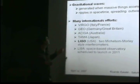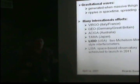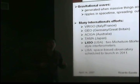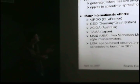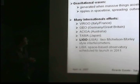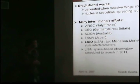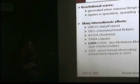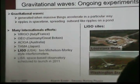So far, we have not directly detected gravitational waves. There are many international efforts trying to detect them. We have Virgo in Italy and France, GEO600 in Germany, AIGO in Australia, TAMA in Japan, and LIGO, which has two Michelson-Morley style detectors — one in Louisiana and one in Washington State.